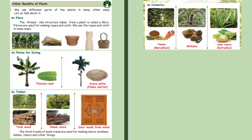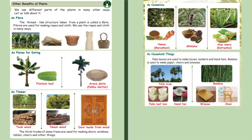As cosmetics, we use henna, sheikakai and aloe vera. As household things, palm leaves are used to make boxes, baskets and hand fans.